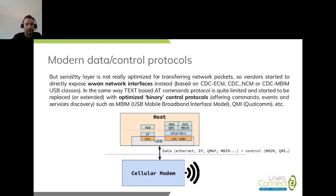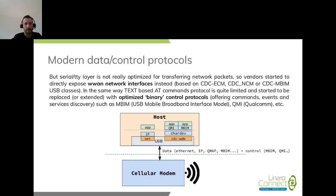Serial was fine, but it's not really optimized for transferring network packets — it's a byte-by-byte link — and 4G and 5G throughput and latency require a more packet-oriented link. That's why some vendors started to expose dedicated USB interfaces to directly submit and transfer data packets using network USB interfaces, really optimized for USB transfer. There are some vendor interfaces for that, like QMAP, and the USB-IF also specified a protocol called MBIM, which allows aggregating IP packets to support mixing of several PDP contexts — having several connections at the same time.